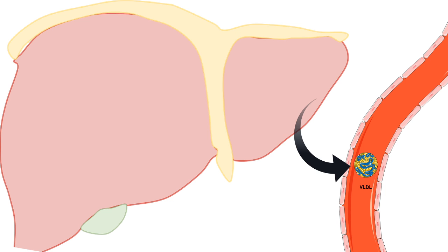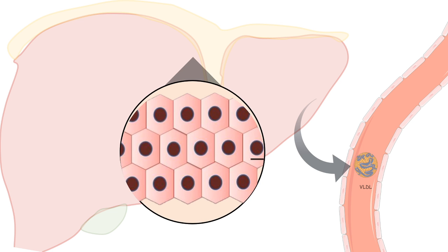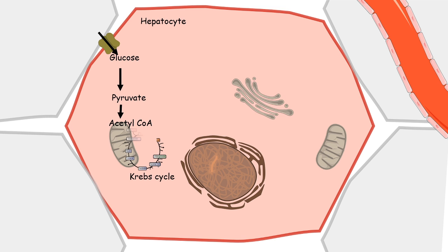Now let's talk about VLDL, or very low density lipoprotein, which is exclusively secreted by the liver, not by the intestine. VLDL is generated de novo inside the liver hepatocytes. The liver hepatocyte receives input of glucose from the bloodstream. Glucose enters the hepatocyte, undergoes glycolysis, and generates pyruvate, which is converted to acetyl-CoA. Acetyl-CoA feeds into the TCA cycle and generates ATP via the electron transport chain.